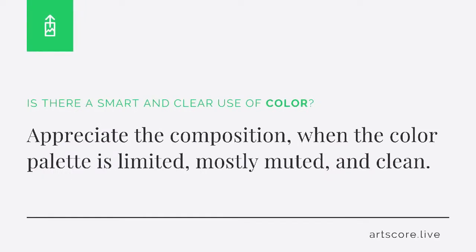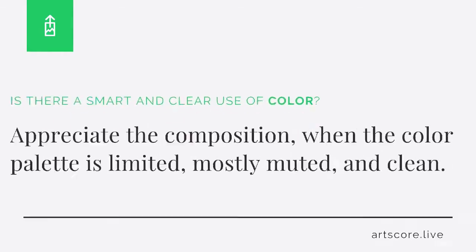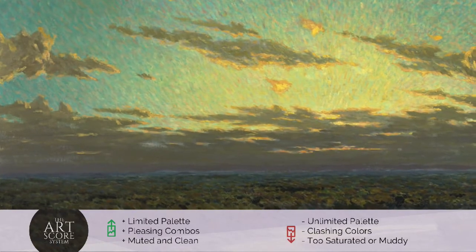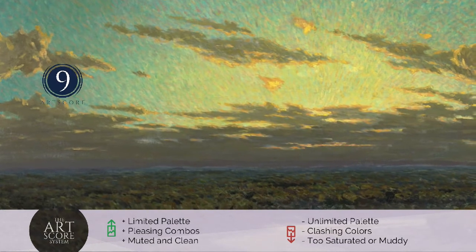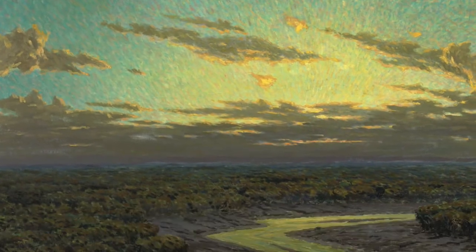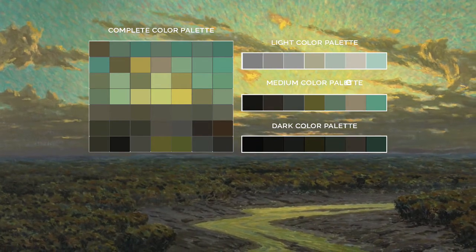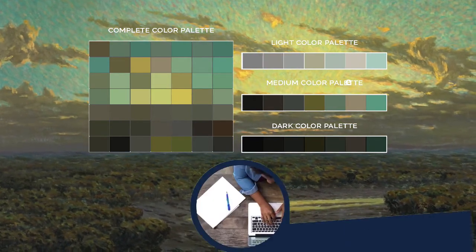Color. Is there a smart and clear use of color? Appreciate the composition when the color palette is limited, mostly muted, and clean. But when the colors clash, are loud, or muddy, lower your score. I score this composition a 9. For me, I clearly see how the palette is intelligently limited. The color combinations are smart, and the colors are muted, clean, and strategically composed.